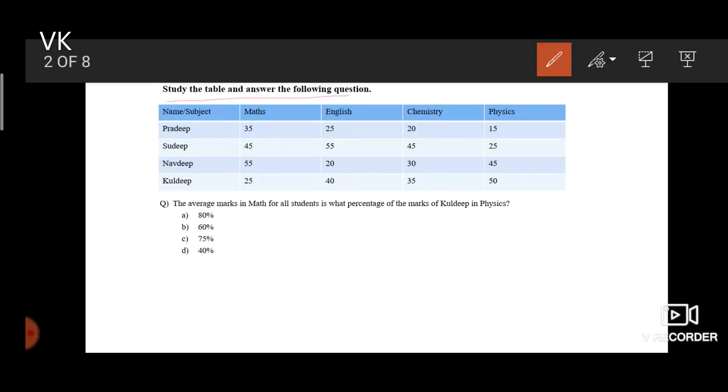Study the following table and answer the following question. The first row of the table has the names of the subjects. The first column has the names of the students. The question is the average marks in maths for all students is what percentage of marks of Kuldeep in physics. When we observe the table, Kuldeep got 50 in physics and let's calculate the average.